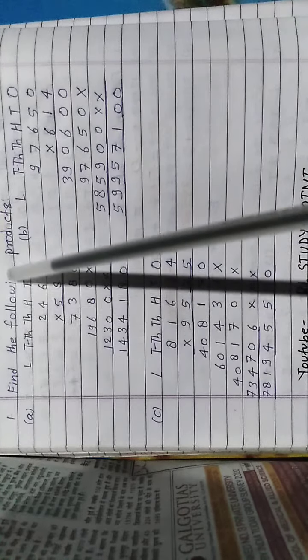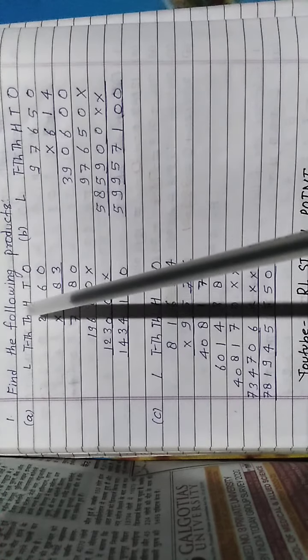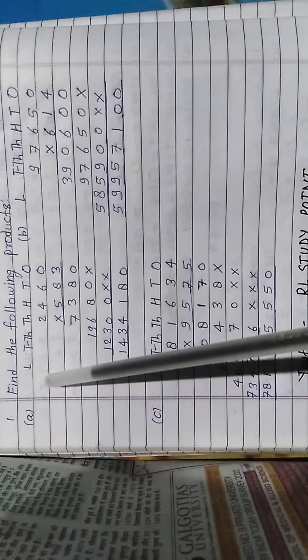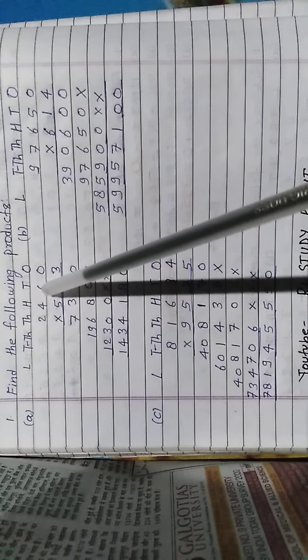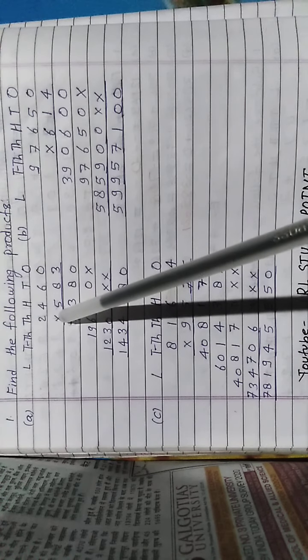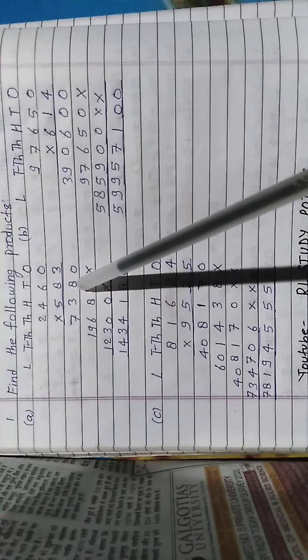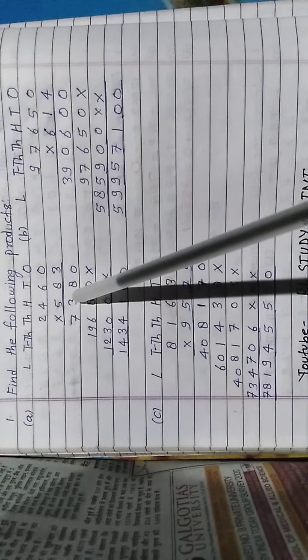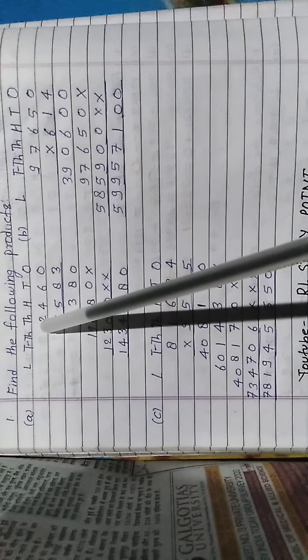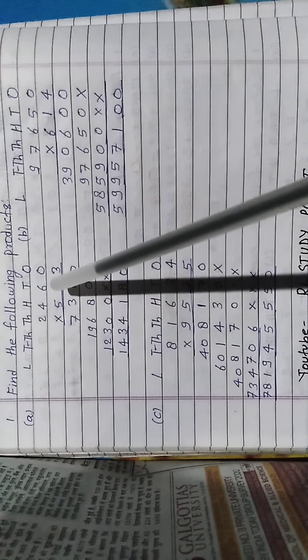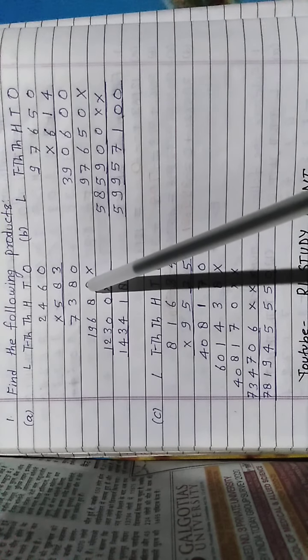Question number first, find the following products. Part a: this 2460 multiply by 583. That's 3 times 0 is 0, 3 times 6 is 18, 8 carry 1. 3 times 4 is 12 and 1 carry, we get 13. 3 times 2 is 6 and 1 carry 7.